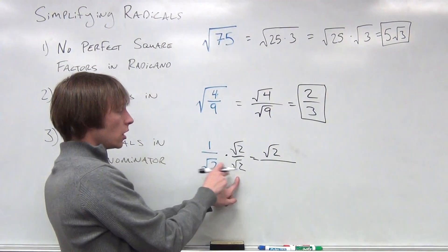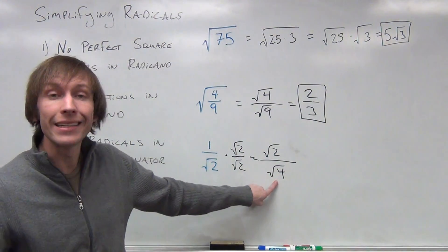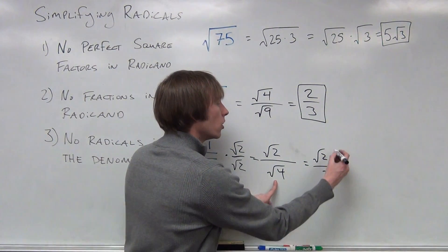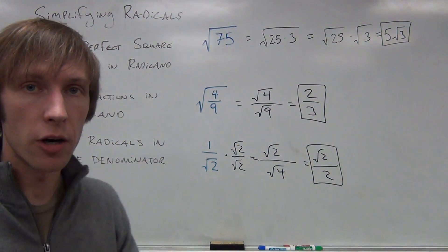1 times radical 2 is radical 2. Radical 2 times radical 2 is radical 4. But I can take the square root of 4 and so can you. The square root of 2 over 2 and that would be our final answer. So here are the three rules.